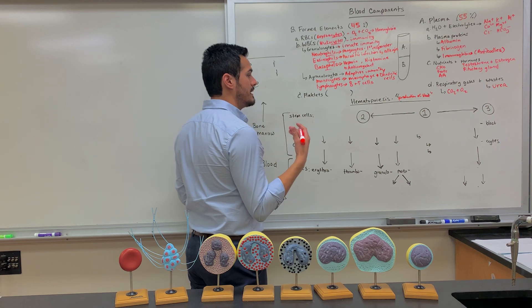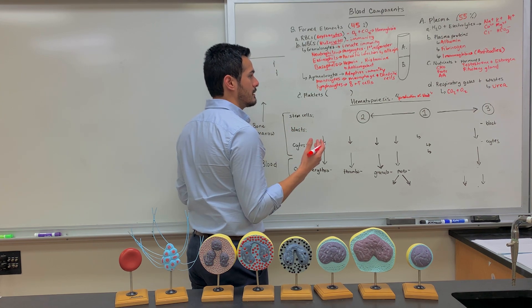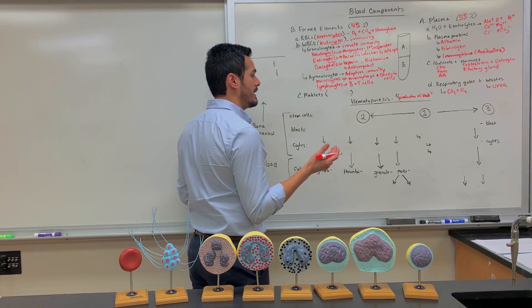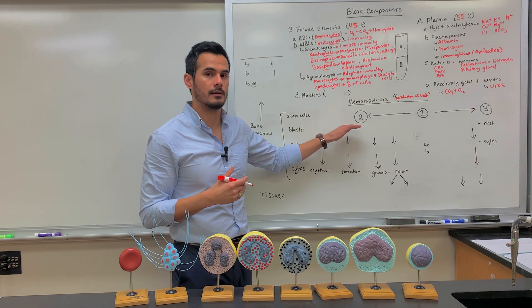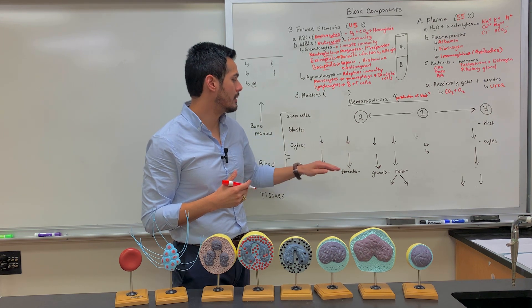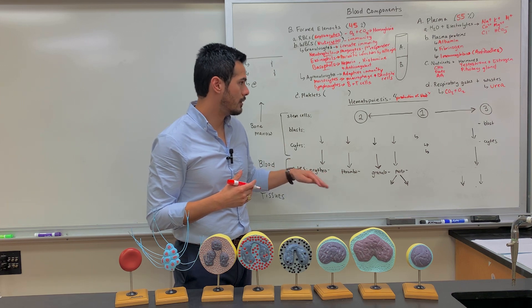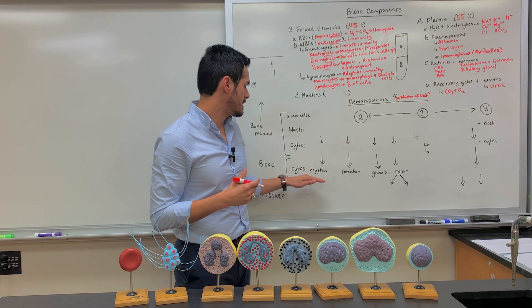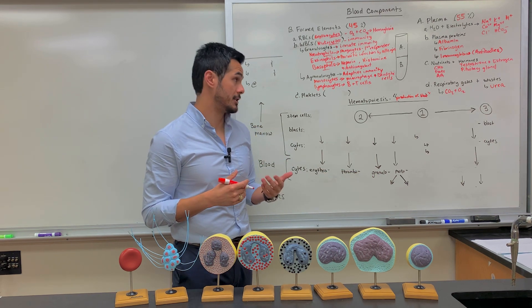So hematopoiesis, this is a process in which differentiation occurs, meaning that we start with stem cells, and then we will finally end up with our completely mature or completely developed specific types of cells that have specific functions.